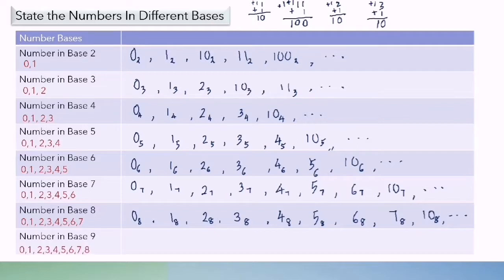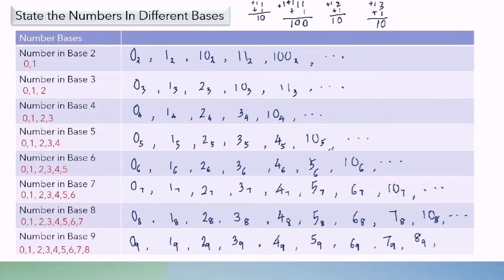Number in base 9 is also the same. We have the digits from 0 to 8. So from 0 base 9 until 8 base 9, it is full already, so we put 1, 0 base 9, and so on.